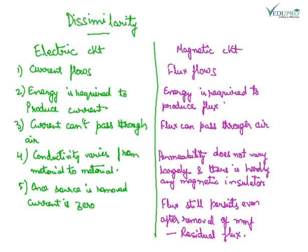Till now we saw the similarities between electric circuit and magnetic circuit. Now we will see the dissimilarities between them. In electric circuit, current flows, and in magnetic circuit, flux flows. Energy is required to produce current and to maintain the current also.